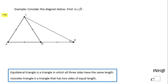Welcome, or welcome back. In this example we have two triangles and we need to find the measure of angle D. Let's take a look first at triangle ABC. We have these markings on these sides, which means that these three sides are congruent — AB equals BC equals AC.